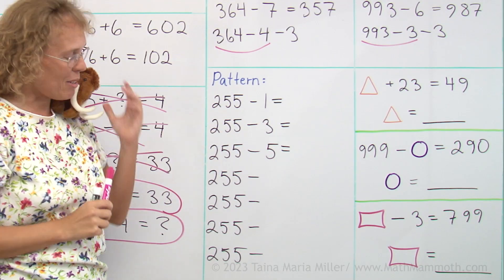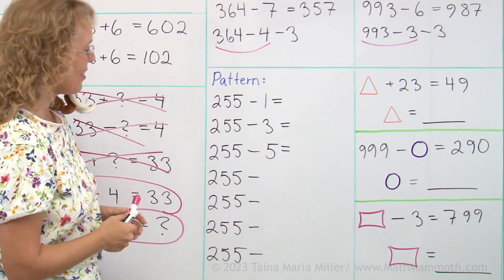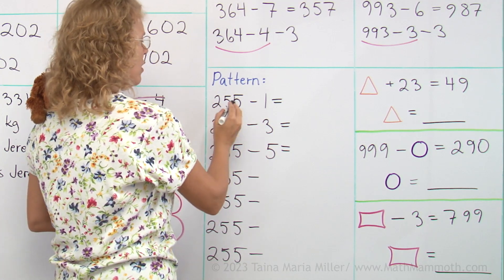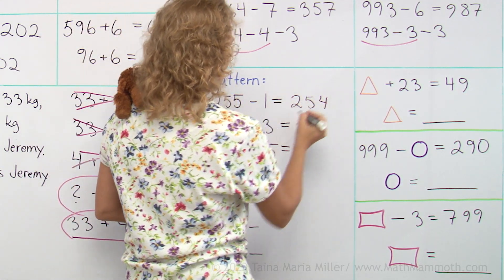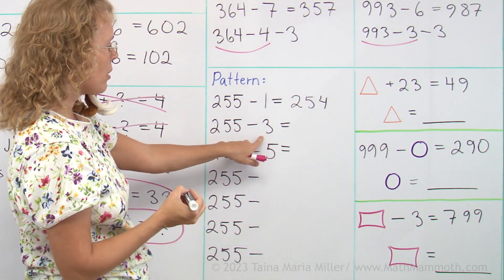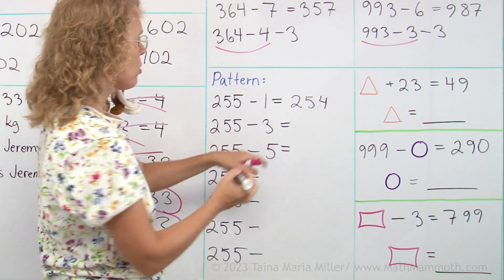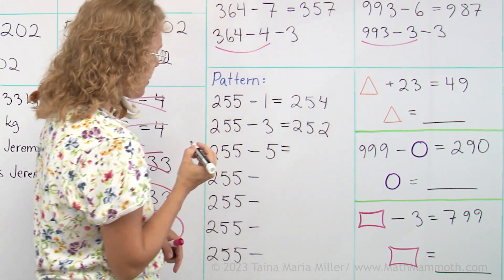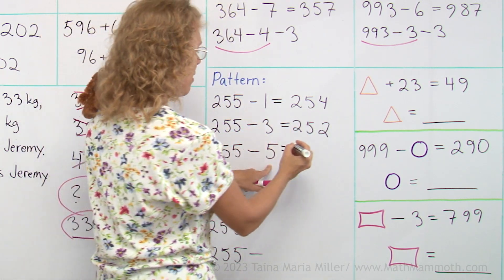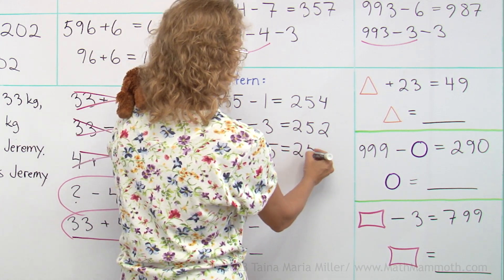Now we have something different, Mathi. Look, a pattern. 255 minus 1. Oh, that's easy. 254. Then what? 255 minus 3. Okay, 5 minus 3 would be 2, 252, right? And then minus 5, so we get 250.